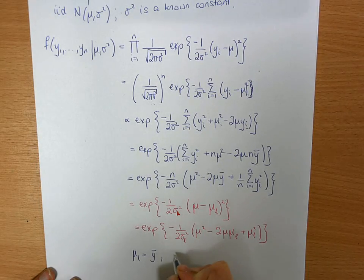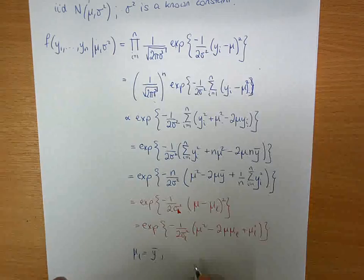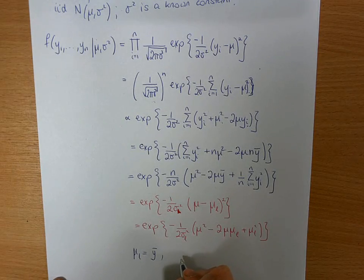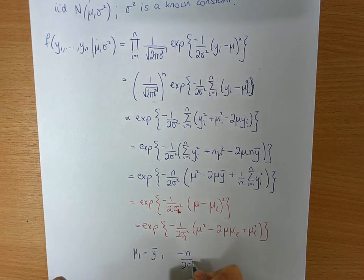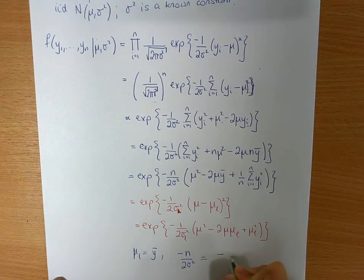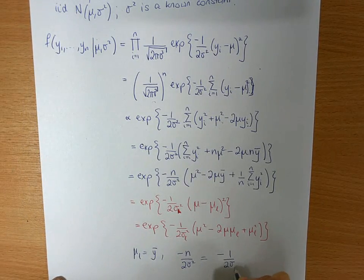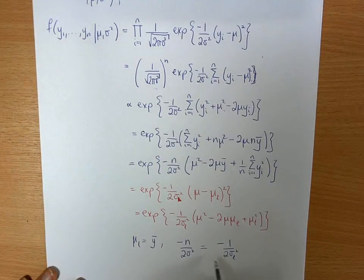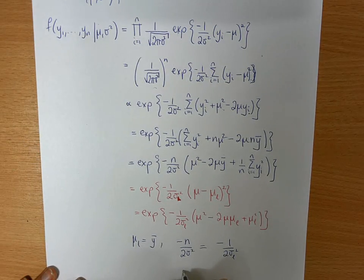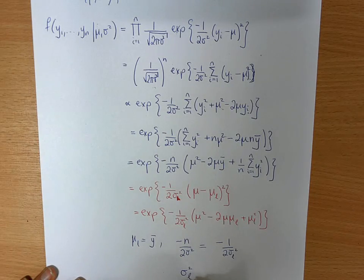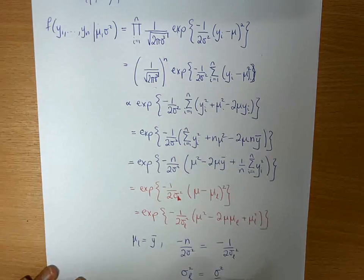And we also note that we should have minus n over 2 sigma squared equals minus 1 over 2 sigma l squared. With a little bit of cross multiplication, you can see that sigma squared l equals sigma squared over n.